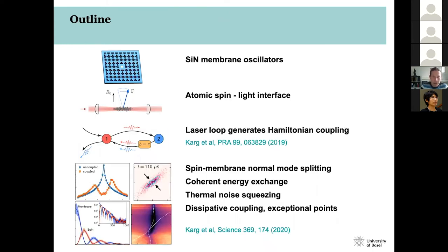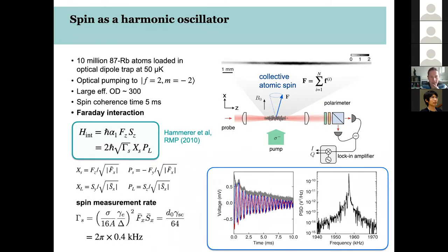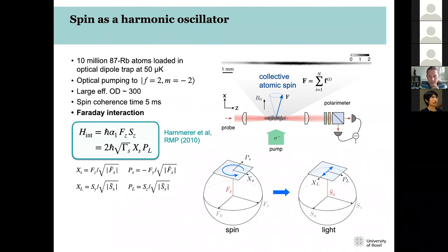Are there questions up to this point regarding our two systems and the interface? A question about polarizations: around the spin there is no cavity, just lenses. Later, polarization optics will transduce the polarization signal into an amplitude modulation before it enters the membrane cavity — I will explain that shortly.